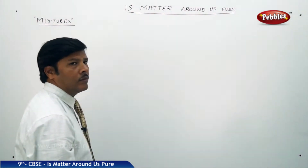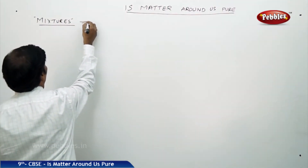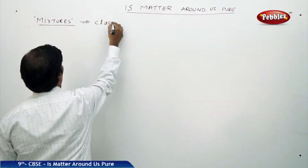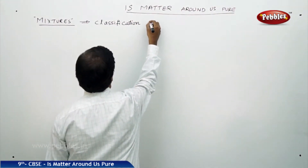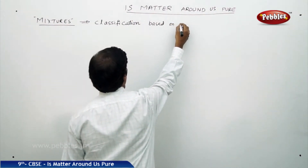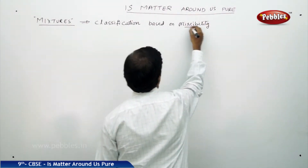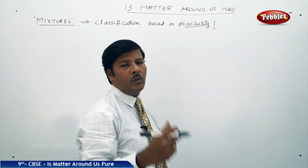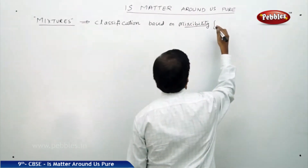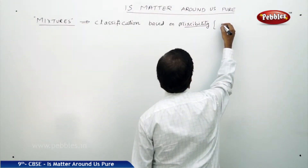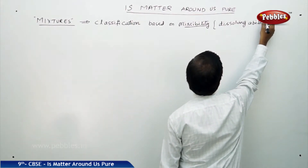If you go to the mixtures, classification of mixtures is based on miscibility. Miscibility is nothing but the ability of the two components or the two constituent particles present in the mixture to dissolve with each other — their dissolving ability.